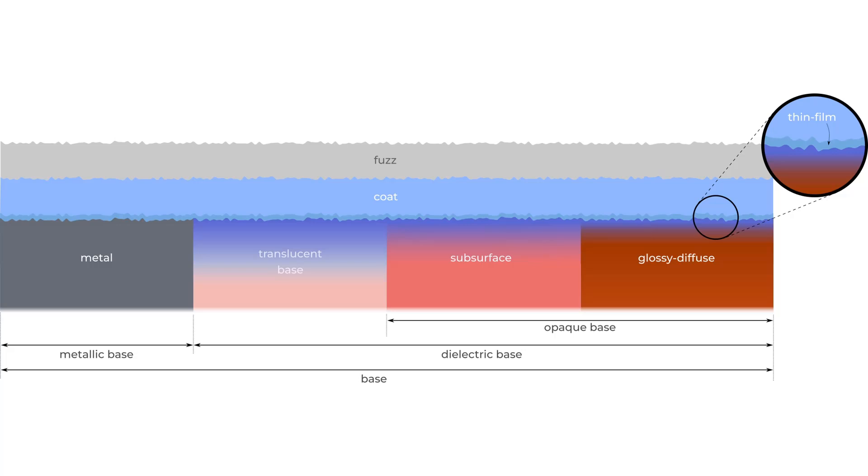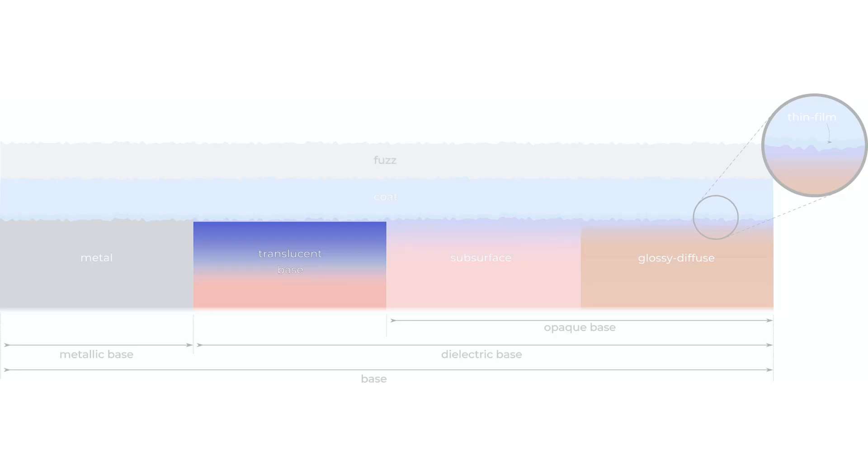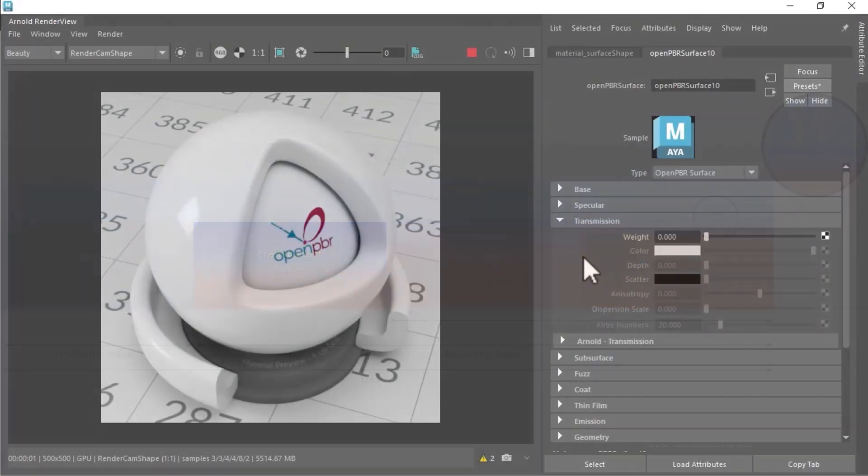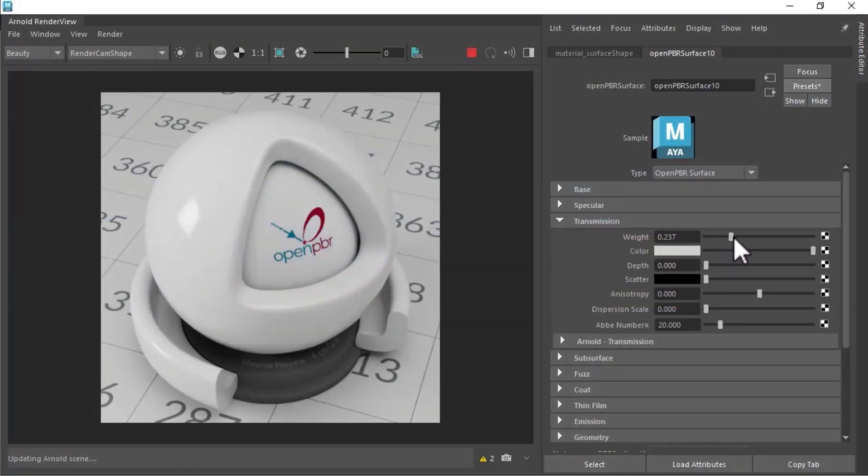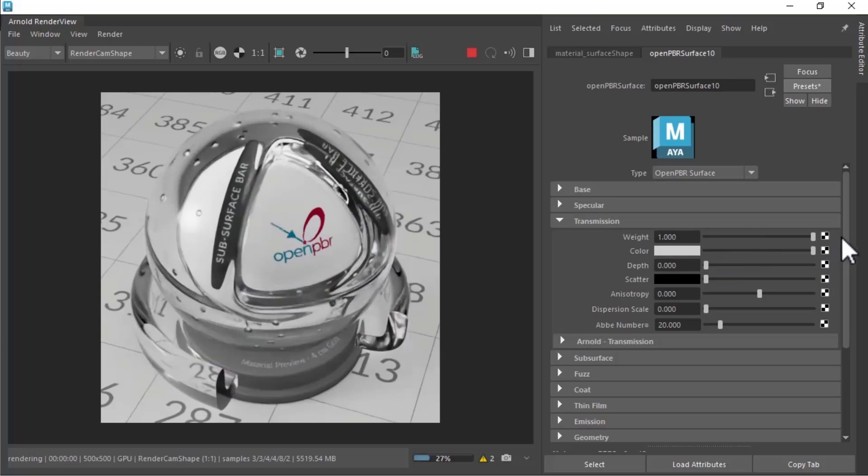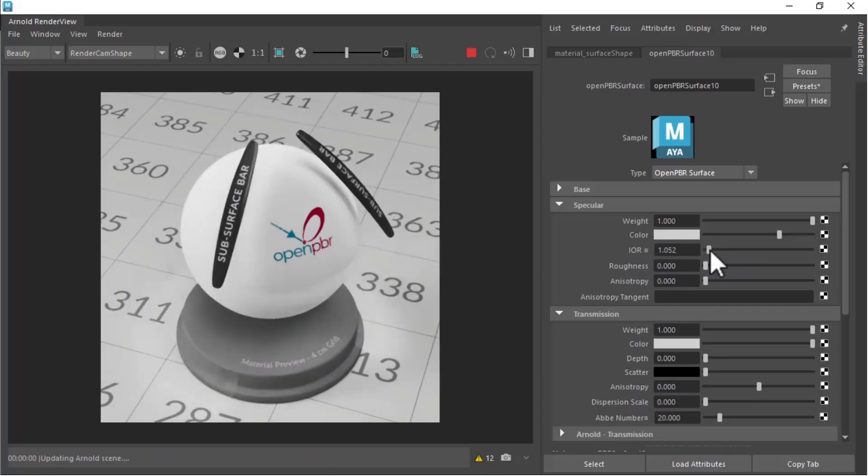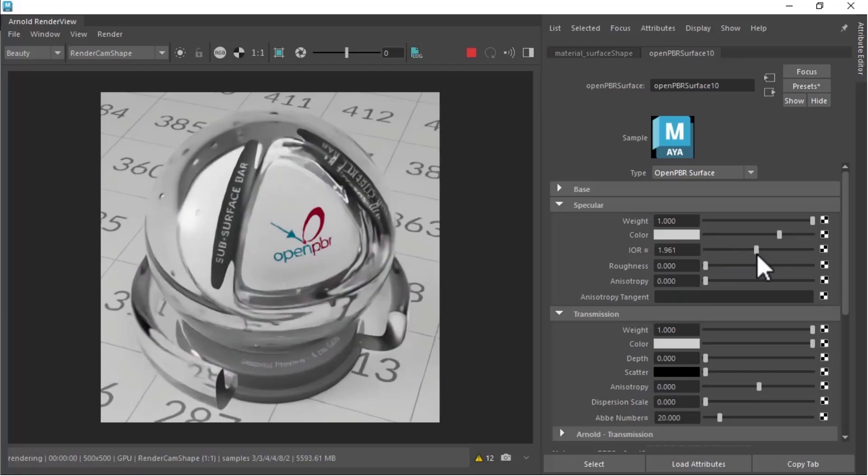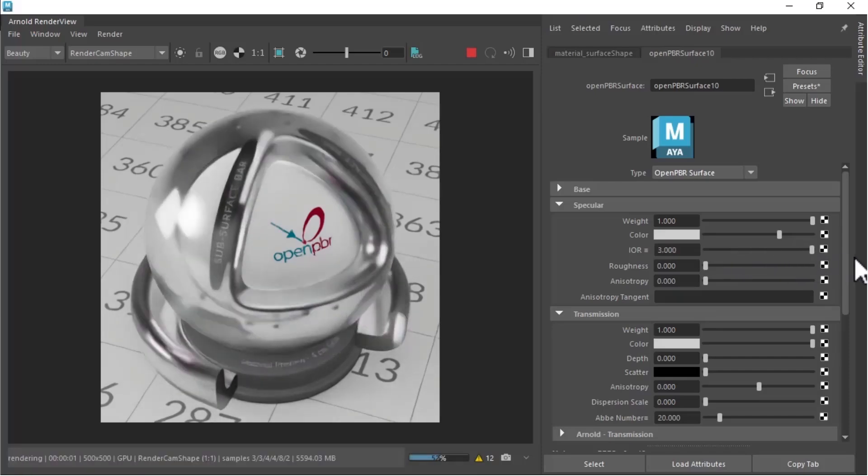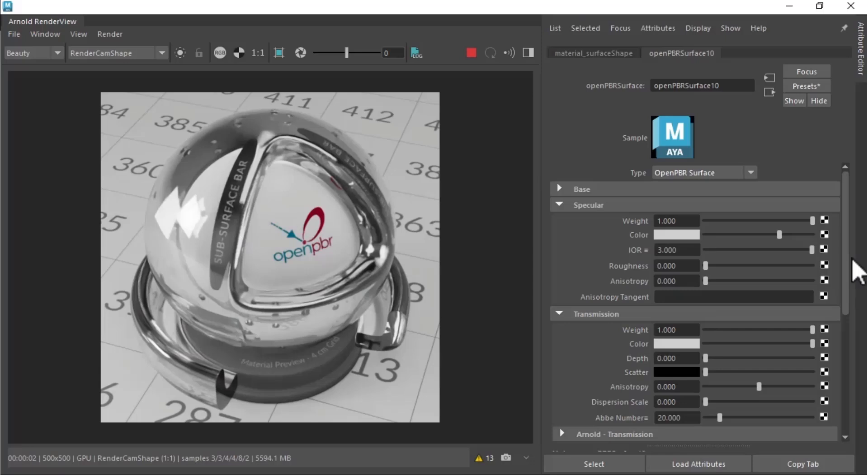Now onto transmission. When transmission weight is 1, with base metalness 0, the surface becomes transparent, although there may still be some internal absorption and scattering as well optionally. Turning on transmission weight makes the base a clear dielectric, such as glass or transparent plastic. In the transmissive case, the effect of specular IOR is quite strong, as it affects the bending angle of the light due to refraction as it enters and exits the dielectric. The look of the material varies considerably as the IOR is varied.